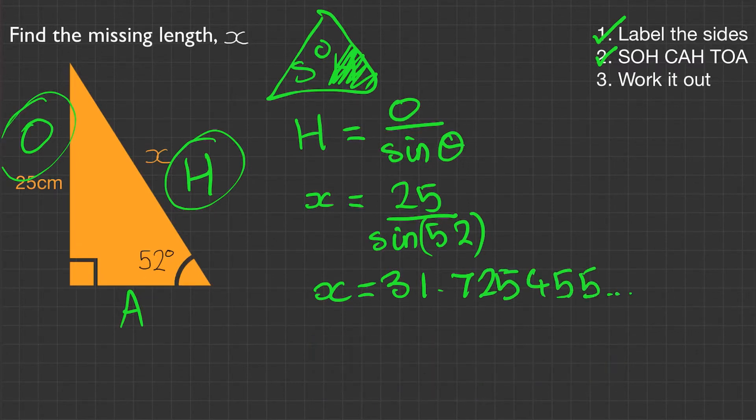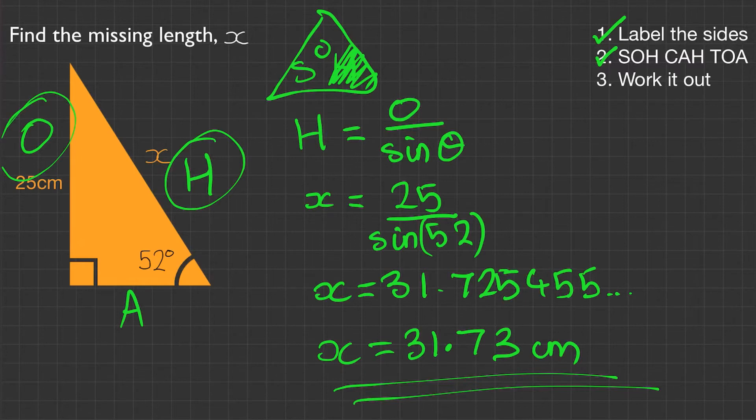We're then left with x equals 31.725455, and it could go on and on, but we want to round it. Now, in this question it hasn't actually given us an amount to round it to. So as an automatic, I will generally round to two significant figures. In the exam, double-check the front of your paper. So for this one, we've got x equals 31.73 centimeters. Make sure you write those units in at the end.